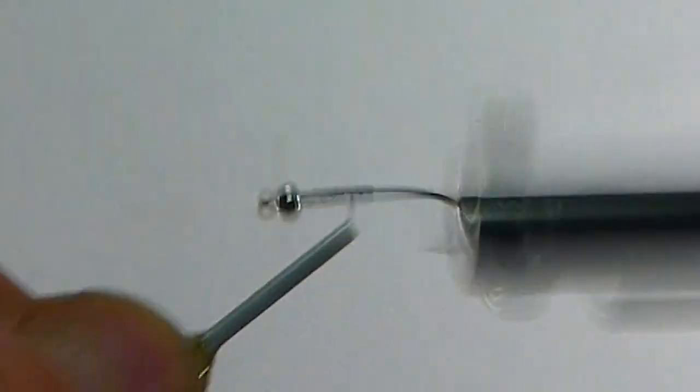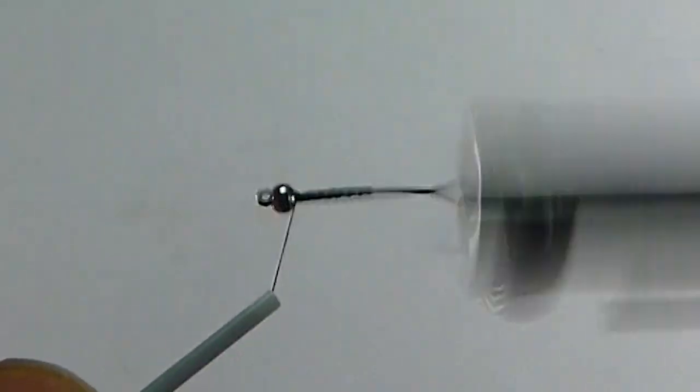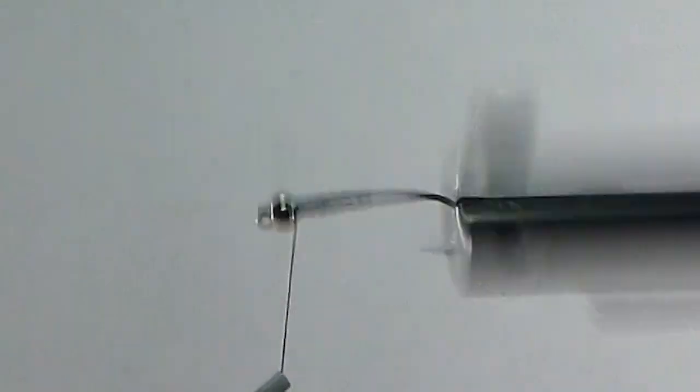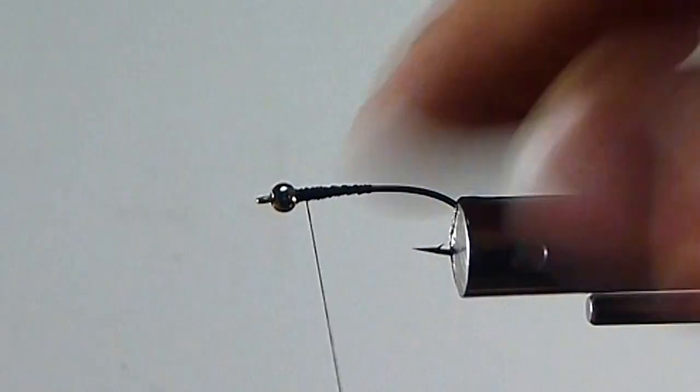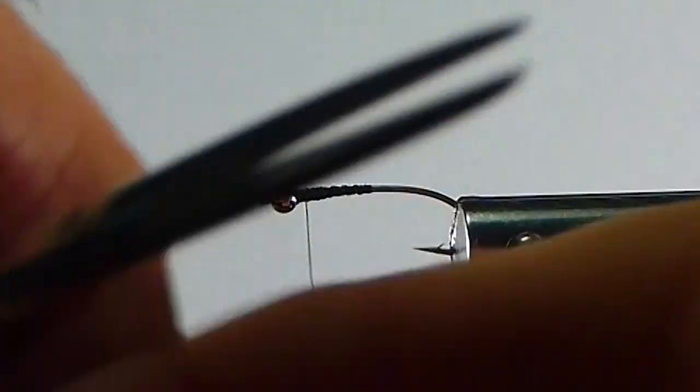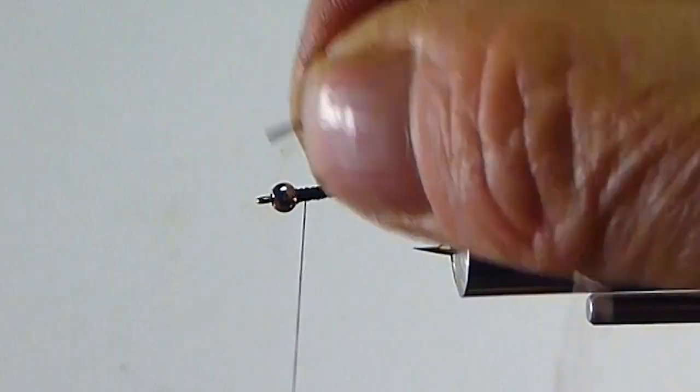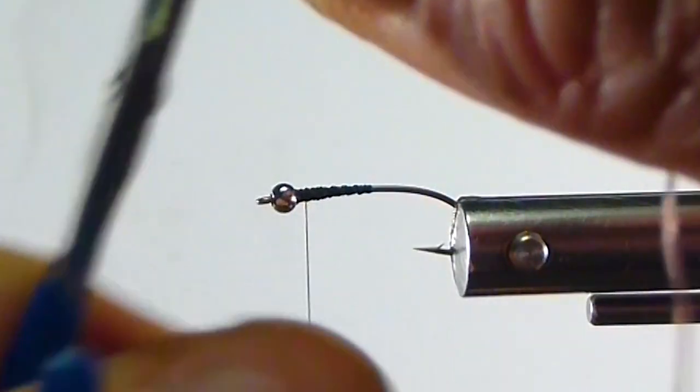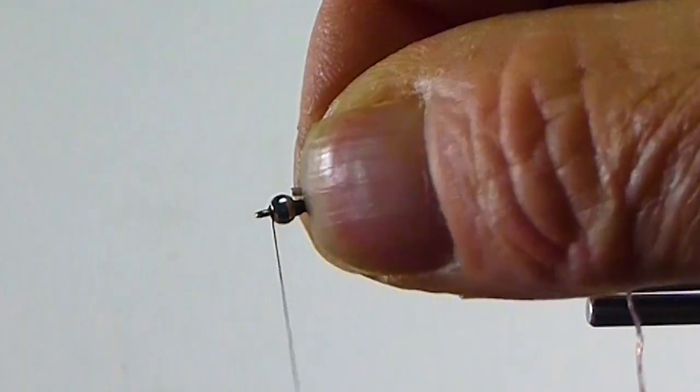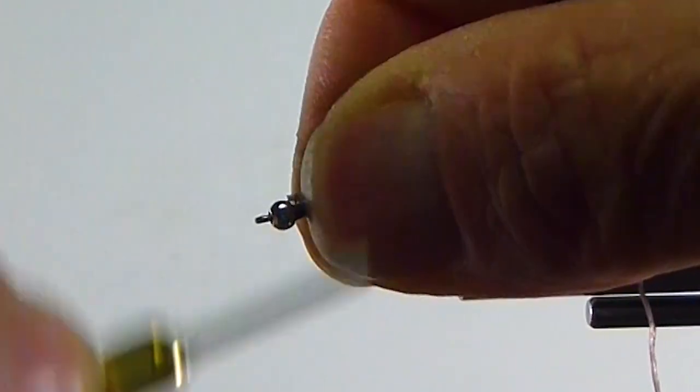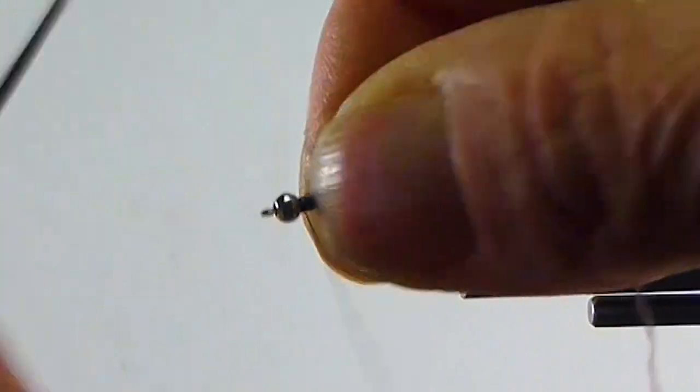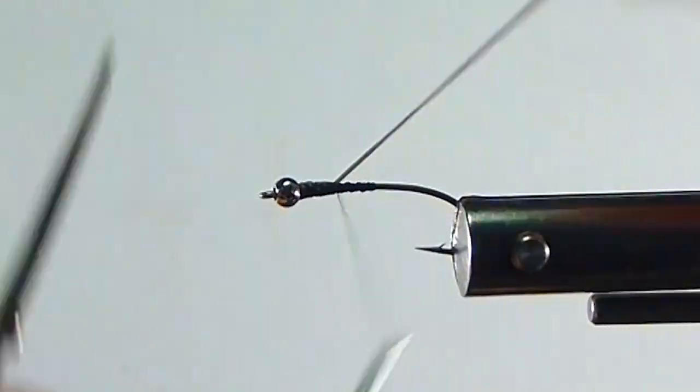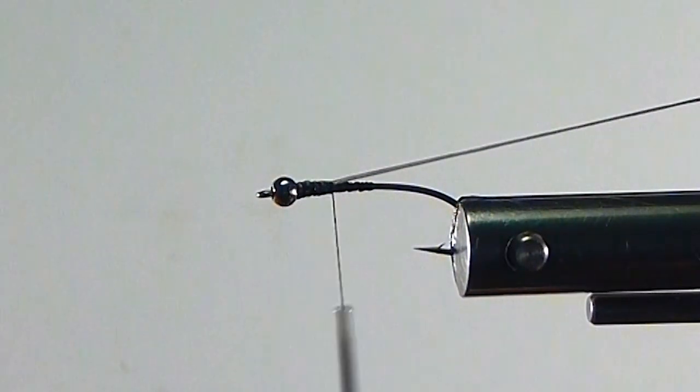So I start my thread at the front here. Just going to get a bit of a taper going here on the front of my fly. Get that started. Catch in some of the stretch floss right behind the bead. Tie that right in behind the bead. Get a couple good turns. And then put it back on my keeper.